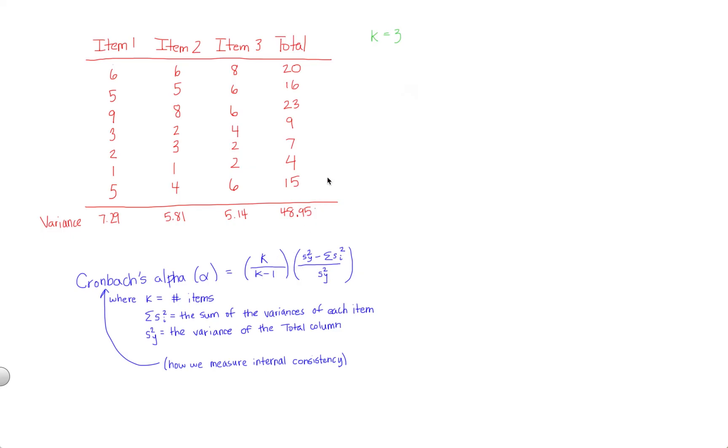We already know what k equals. Now let me break down the second part here. s squared sub y, you'll see that twice. That's simply the variance of the total column. y here represents the observed score, the outcome score, your y variable. So that's 48.95, and that'll go here in the numerator and here in the denominator.